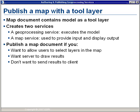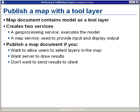You can also publish a map that has what's called a tool layer. The map document contains what appears to be a tool, and you add a tool to a map document by dragging and dropping the tool out of its toolbox onto the table of contents. This creates two services: a geoprocessing service responsible for executing the model, and a map service used to provide input and display the output. You publish a map document if you want to allow users to select layers in the map, as we did in our demonstration, or if you want the server to draw results without sending them to the client.